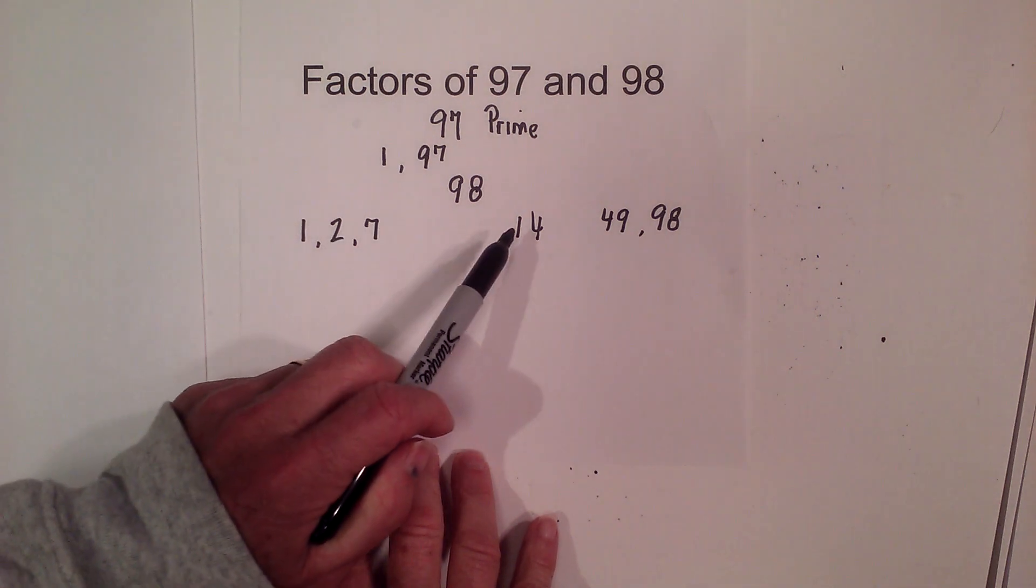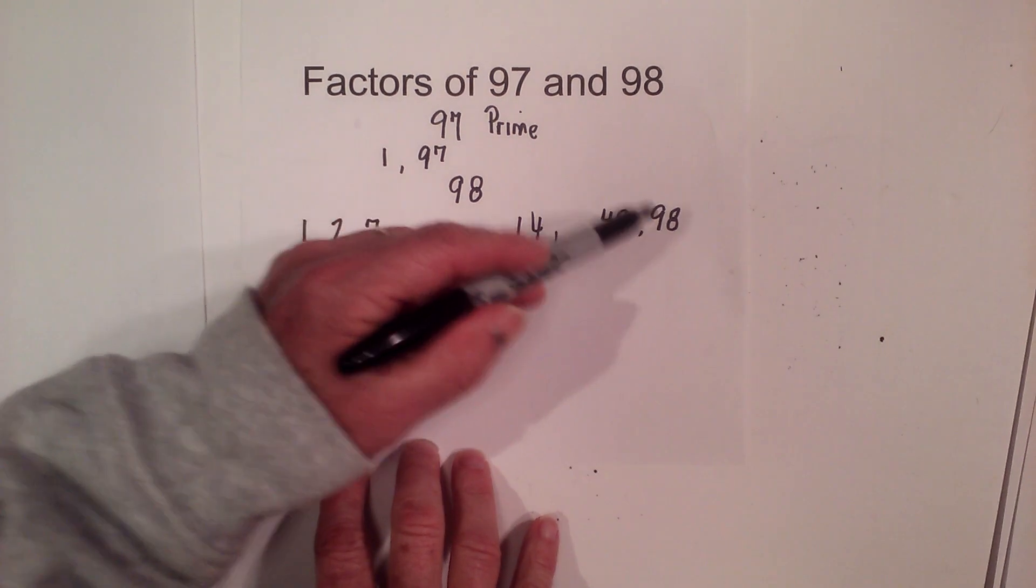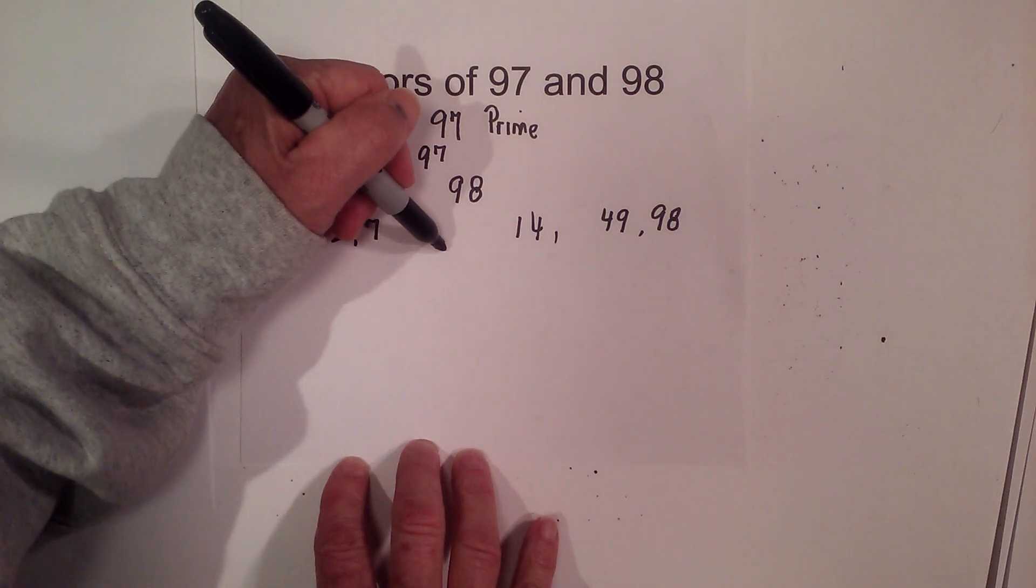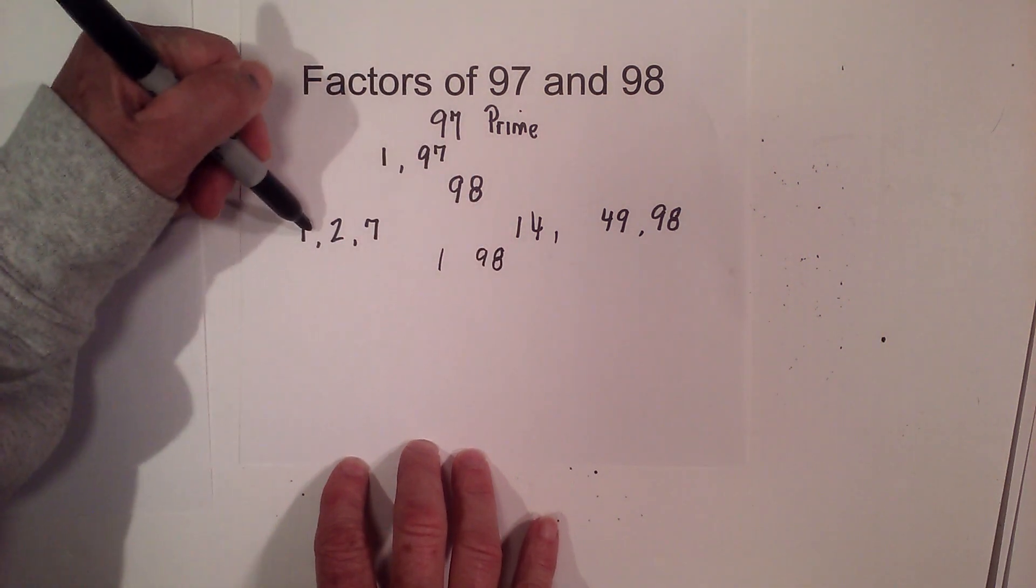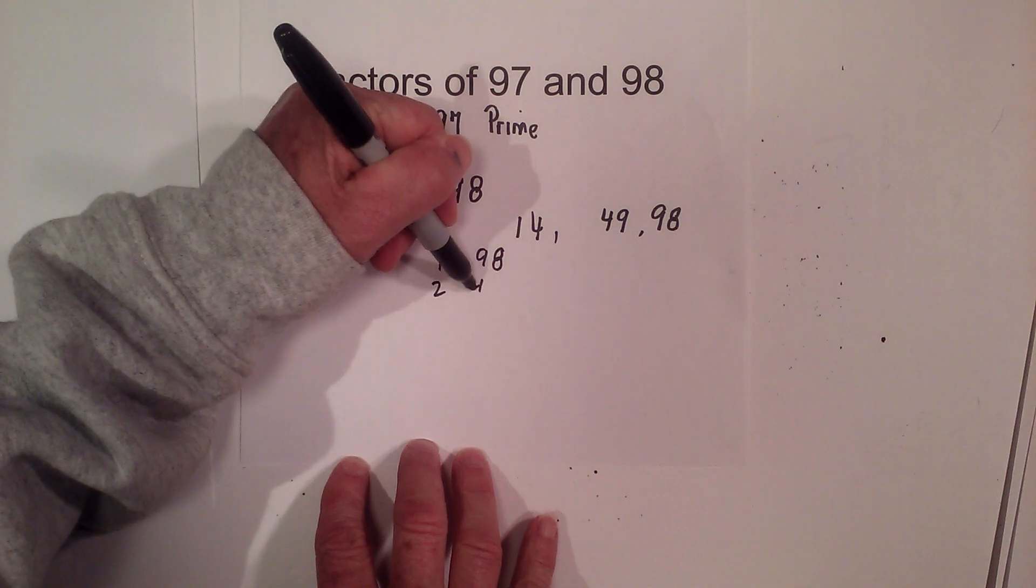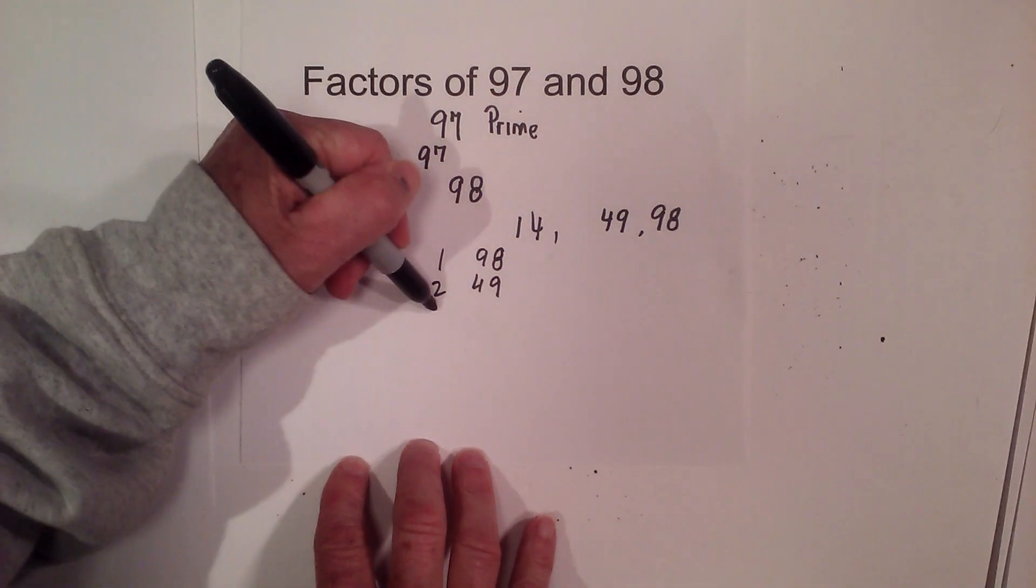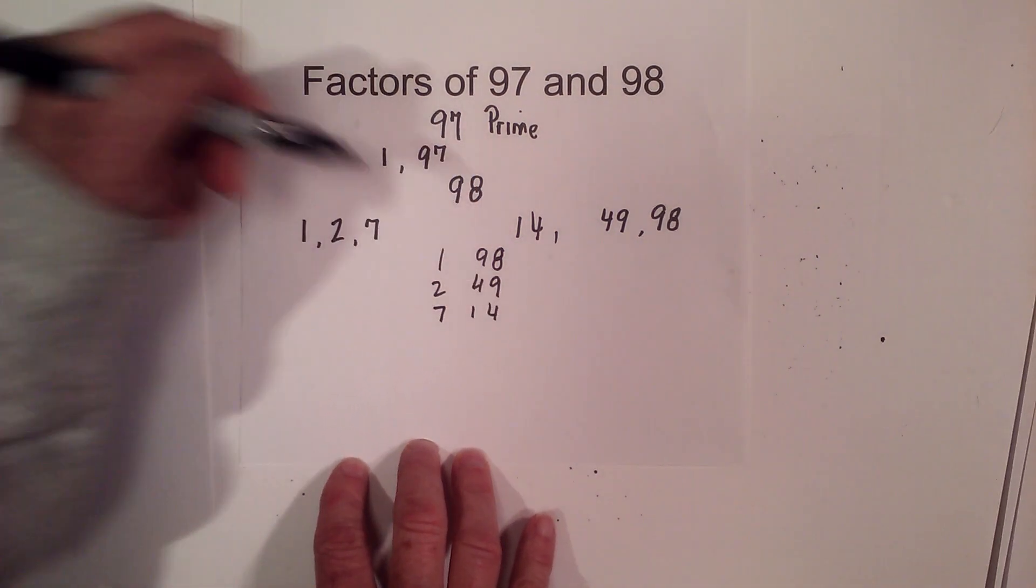2, 7, 14, 49, and 98. And if you'd like pairs, it's 1 times 98, 2 times 49, and 7 times 14.